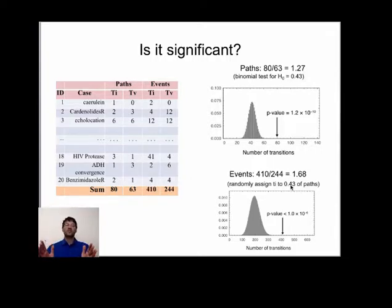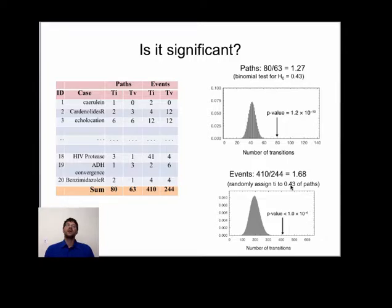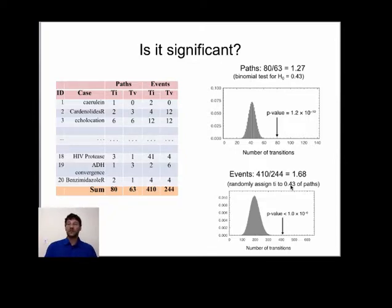So that's the main result of this study. When we look at reported cases of parallel adaptation, there's a several-fold excess of transitions, and this excess is highly significant. This excess is consistent with the pervasive effect of mutational bias on adaptation. However, we need to do more tests before drawing a firm conclusion, because all we've really done so far is reject the null hypothesis.